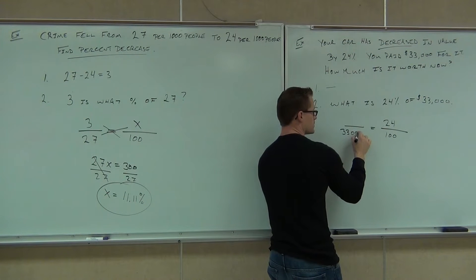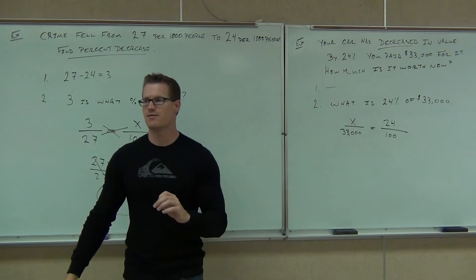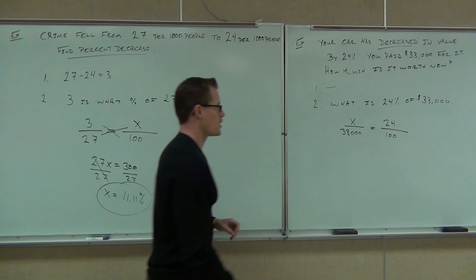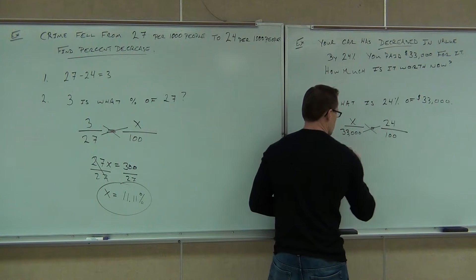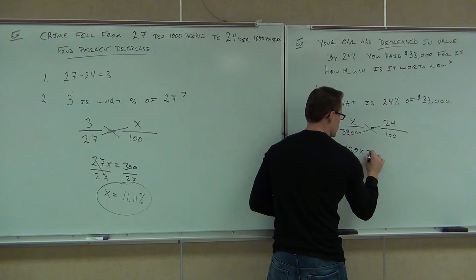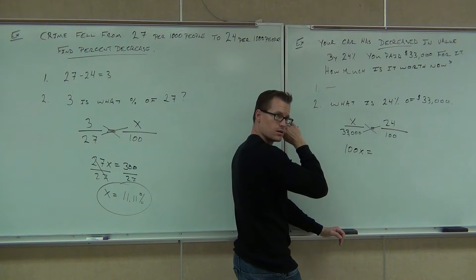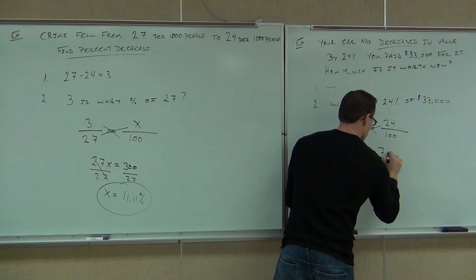of 33,000, and I don't know what the is is. I don't know what my value is going to be. If we cross multiply, we get 100x equal, what is that going to give you? $792,000.